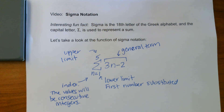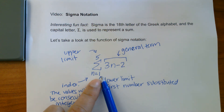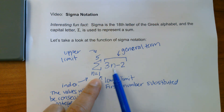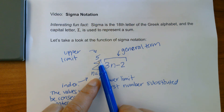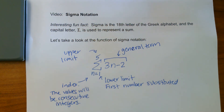So there you have it — the parts of sigma notation. We are going to be substituting in one into n and finding an answer. Then we're going to do it for all the numbers — two, three, four, five — stopping at our upper limit of five.